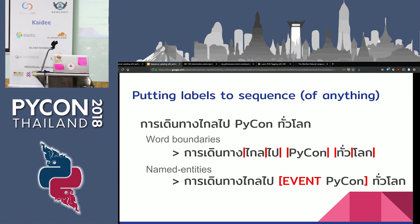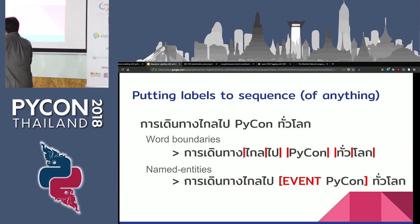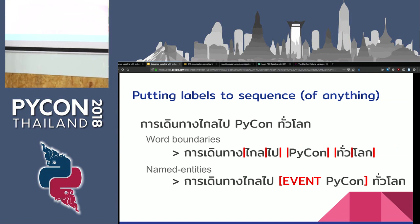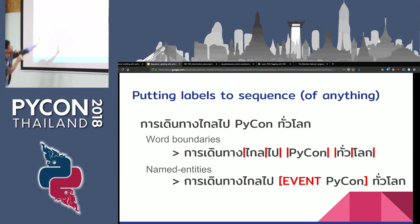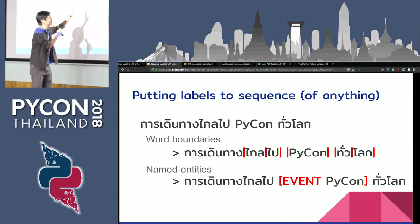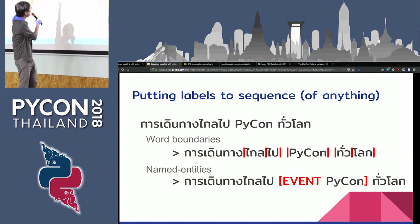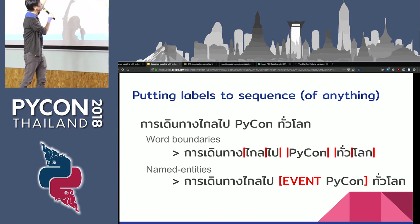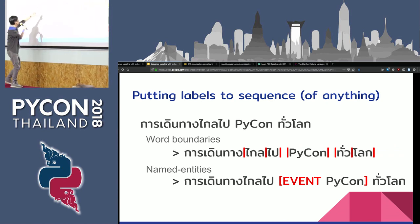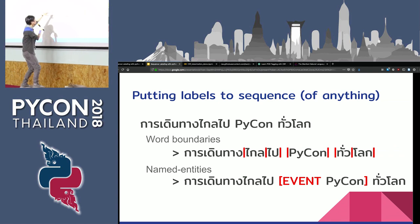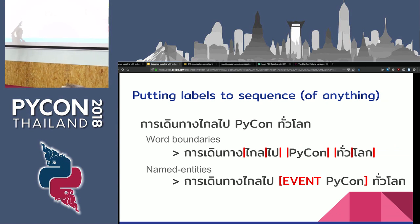So let's say we have some sequences, like that sequence, and we'd like to do some labeling. The sequences — for example, these are characters, like text — are shown in black, and you need to put labels, shown in red. For example, word boundaries: this is one word, this is another word, this is another word, and that's two other words. So that's one kind of label.